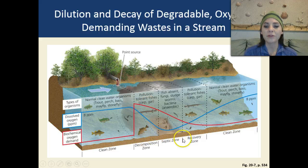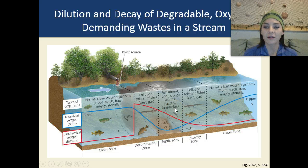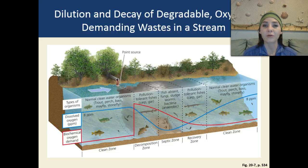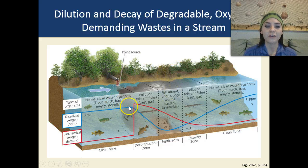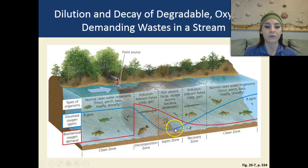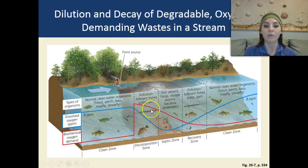Then we move into our septic zone. This is when fish are absent. We see a lot of fungi develop, we have sludge worms, and we also have a lot of anaerobic bacteria that start appearing. The dissolved oxygen curve has gone way down, and the biochemical oxygen demand has gone way up.